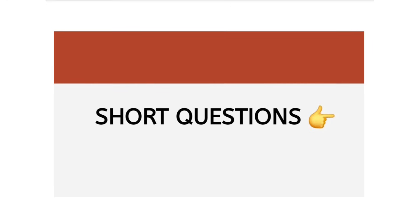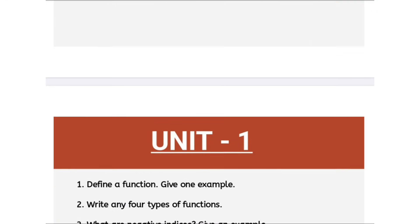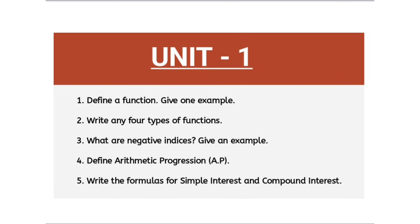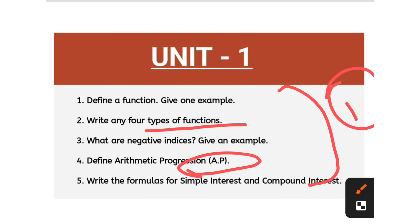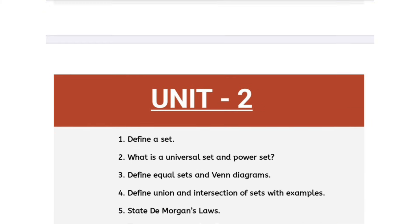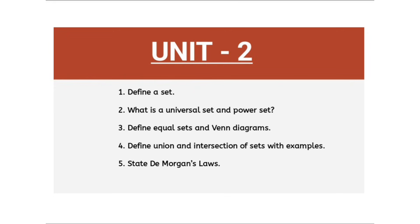Now we will discuss the short important questions from unit number one. I have given only theory questions in short — try to give priority only to the theory questions in Part A. These five questions are compulsory; one question we can expect in the examination. Try to prepare these five questions: four types of functions, what is arithmetic progression, what is a function with an example — these types of questions we can compulsorily expect. In unit number two, these are the top five important theory questions for Part A.